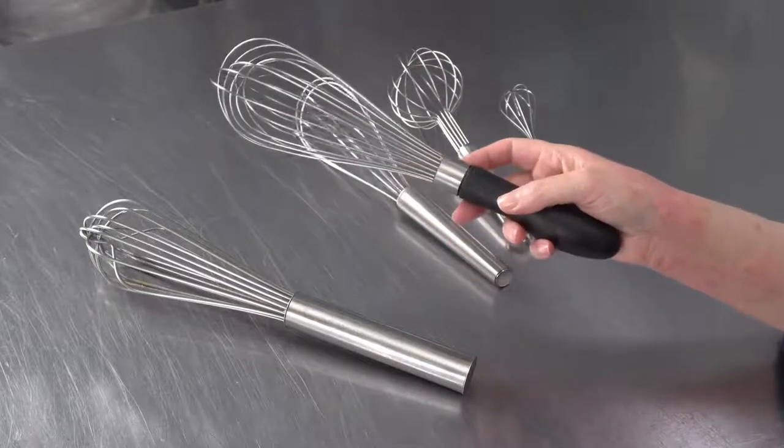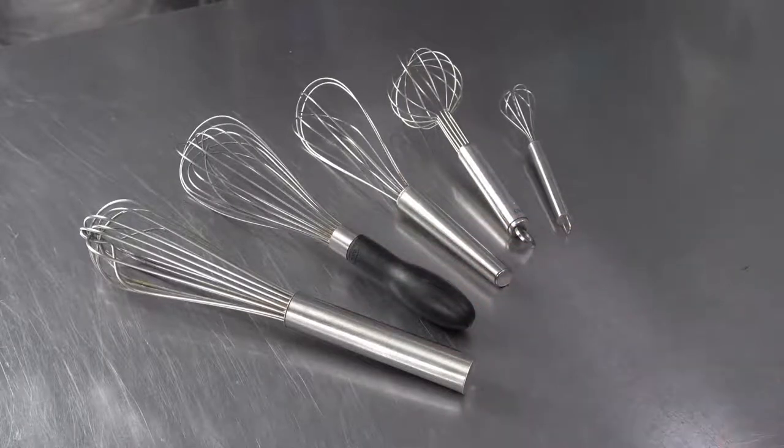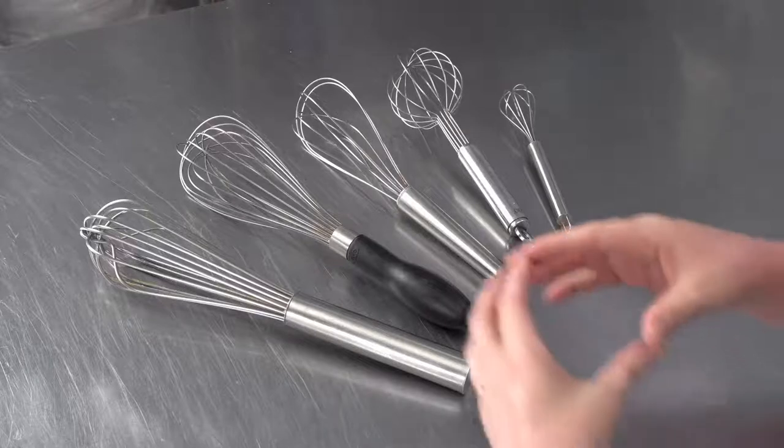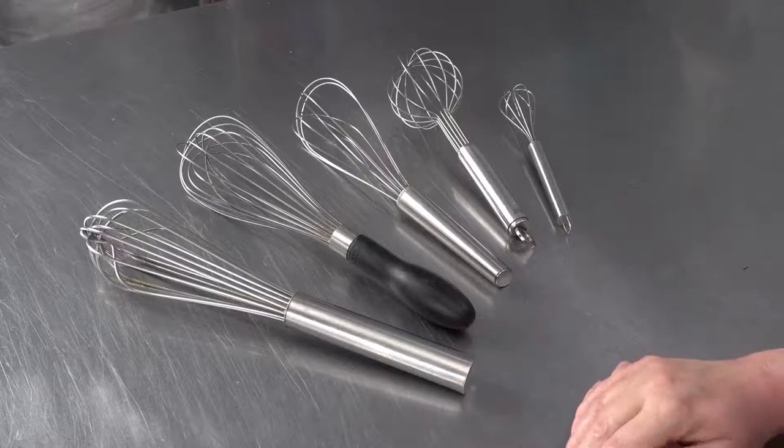We're whisking a lot of batters, fillings, and things like that. If you're doing a lot of work in a sauce pot and you're doing work over the stove, you might want to go with a French whisk that has a more tapered shape. It's not as fat at the end and can be easier to use in saucepans.